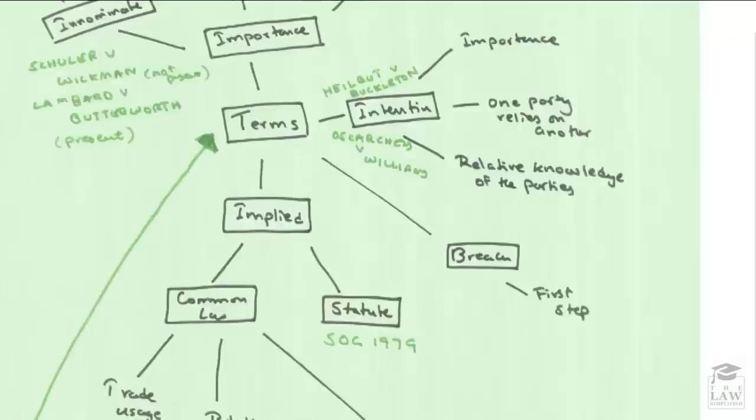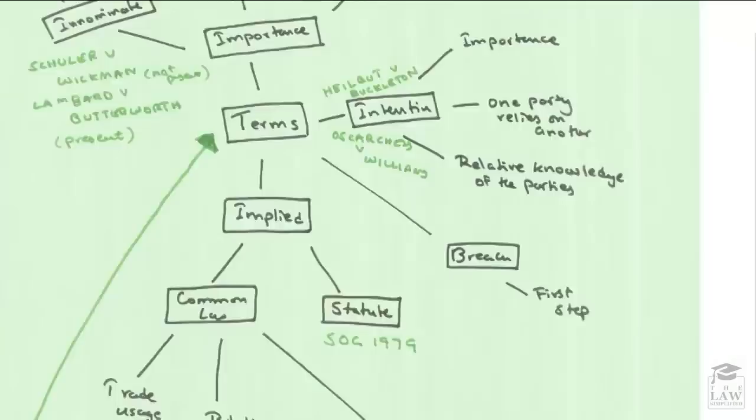So that was a brief outline of terms of a contract in relation to the law of contracts. We looked at how exactly the terms of a contract elucidates what obligations are imposed upon the parties themselves and what remedies are available for alleged breaches.